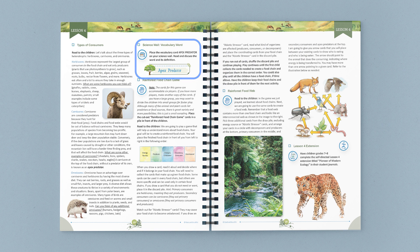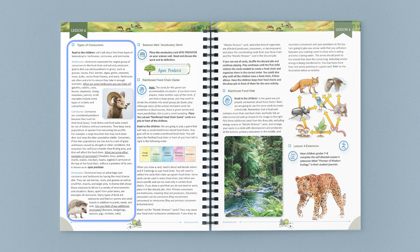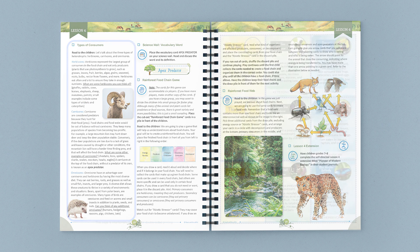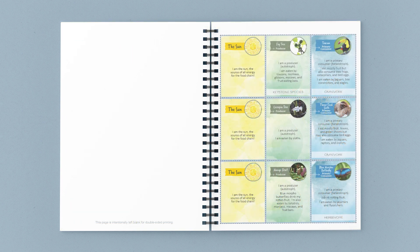Then children learn about the three types of consumers: herbivores, carnivores, and omnivores. Next, using the rainforest food chain cards in the coursebook, children play an engaging game that helps them better understand the food chain.